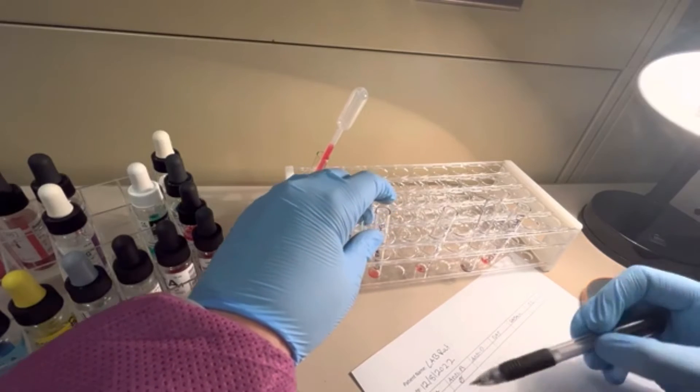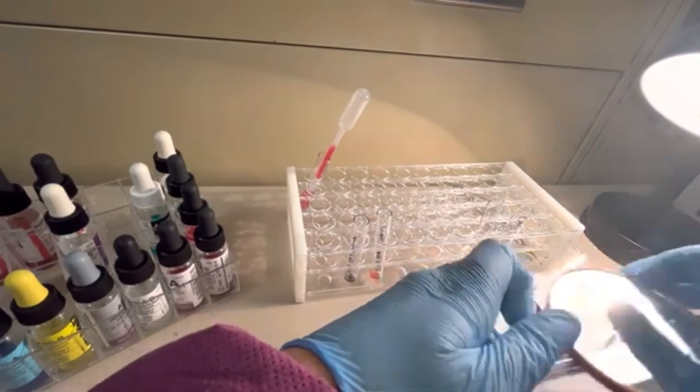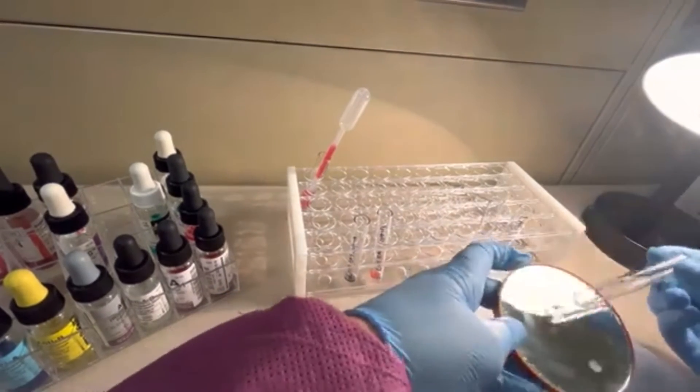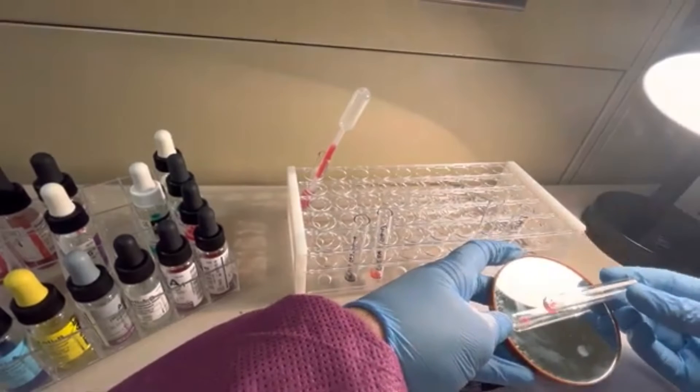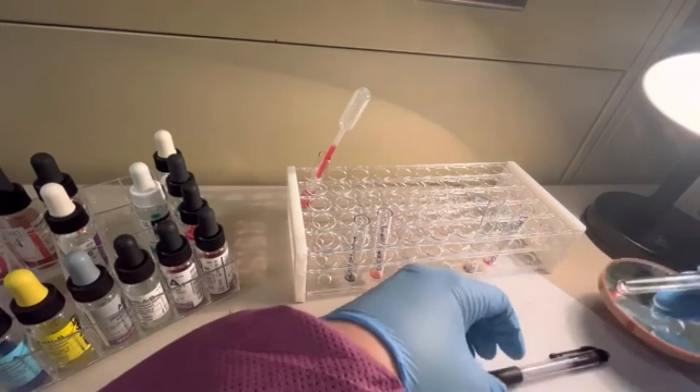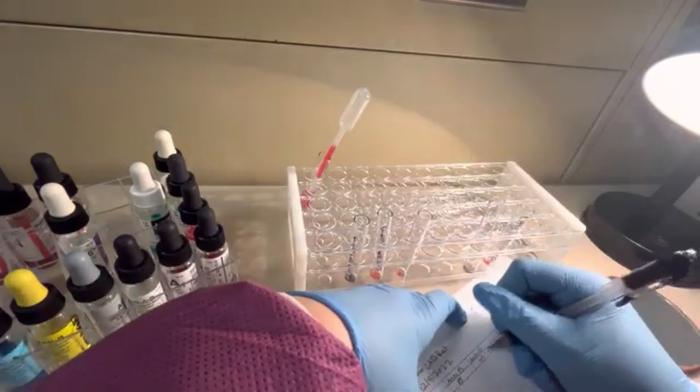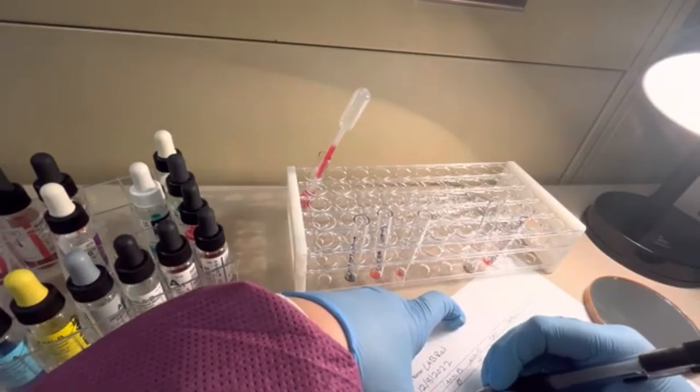Now let's figure out their RH status. We can do that by looking at our anti-D. Oh yeah, that's a beautiful, beautiful clump there. We're going to look. That one is 4 plus as well. So this patient is A positive.